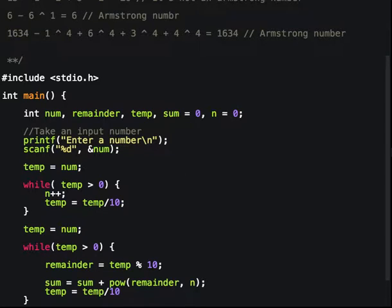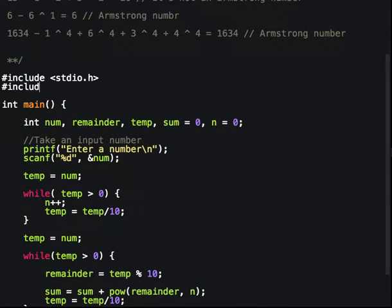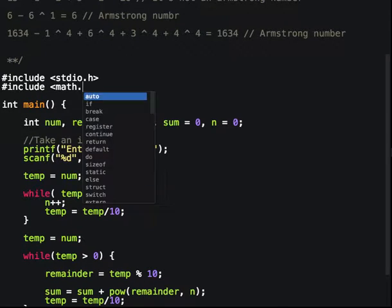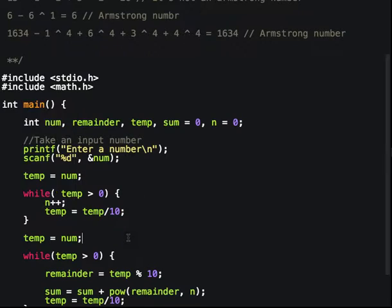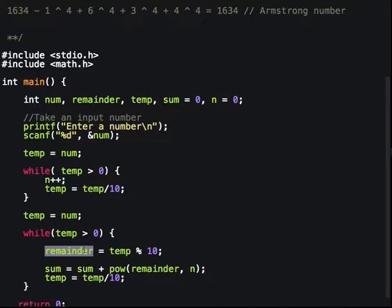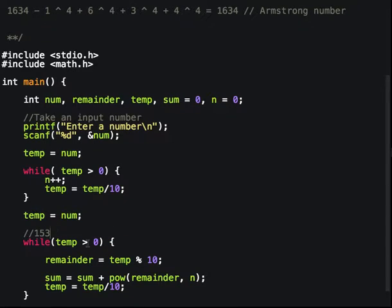If temp is greater than 0, then we find the remainder. In case of 153, the remainder is 3. Sum is initially 0, so 0 plus 3 to the power of 3, which is the length of the number. Now the temp reduces to 15, so we have sum equals 27, temp equals 15.